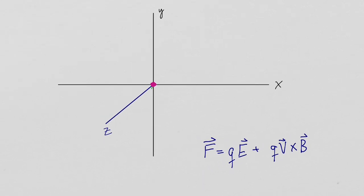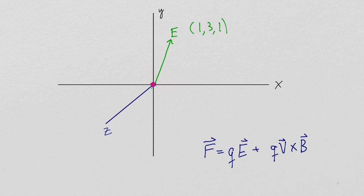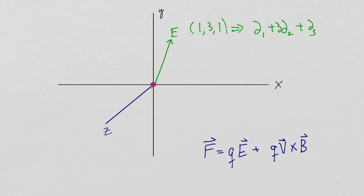Now we are going to calculate the force on this particle. I'm going to presume an electric field that exists at this point with components 1, 3, and 1 — so 1 unit in the X direction, 3 in the Y, and 1 in the Z, which means it's coming out of the plane a little bit. Therefore, this vector is given by partial 1 plus 3 partial 2 plus partial 3 — that's the vector formulation in the tangent space of this Euclidean flat classic electromagnetic universe.